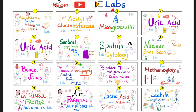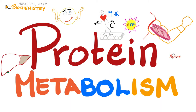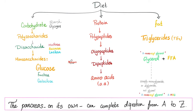Please watch my videos in this playlist in order, as well as my previous video titled Protein Metabolism, found in my biochemistry playlist. Here is your diet — it has carbs, proteins, and fat. When a baby is born, the baby is breastfed. Breast milk has protein, some fat, and the sugar in breast milk is lactose.